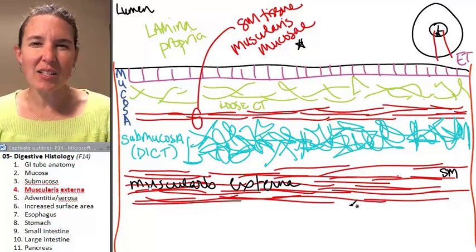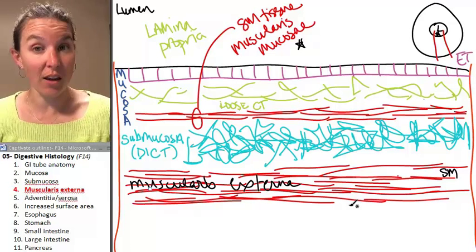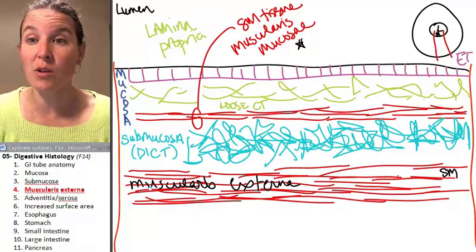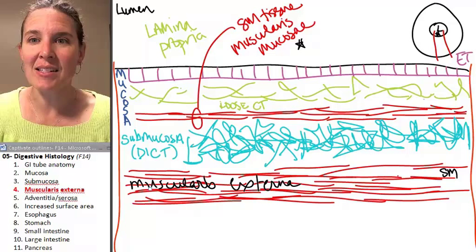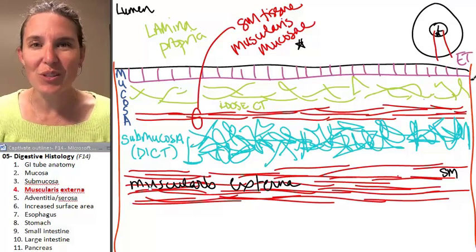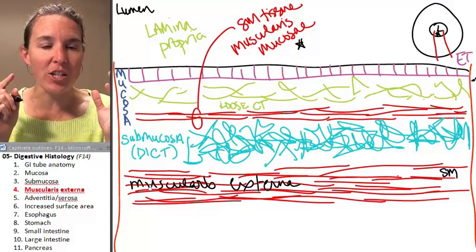What was I going to tell you about it? Muscularis externa is generally thicker than muscularis mucosa. And there's two layers of it. Now watch and be amazed.